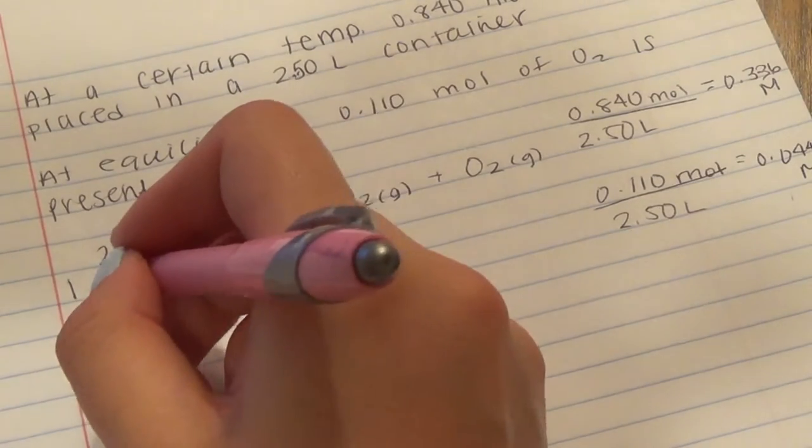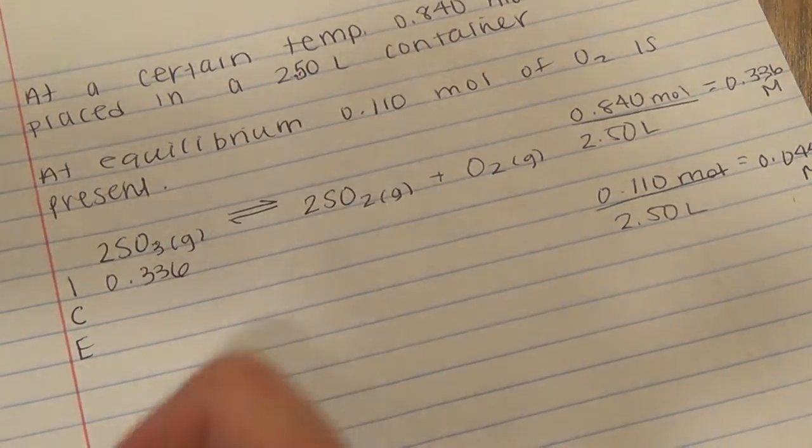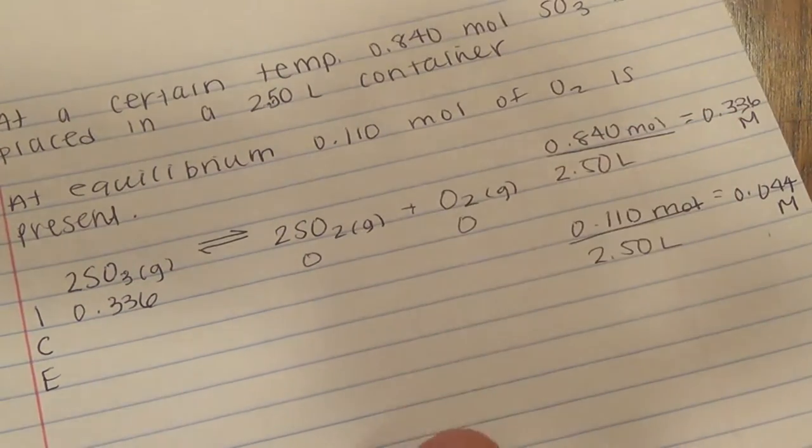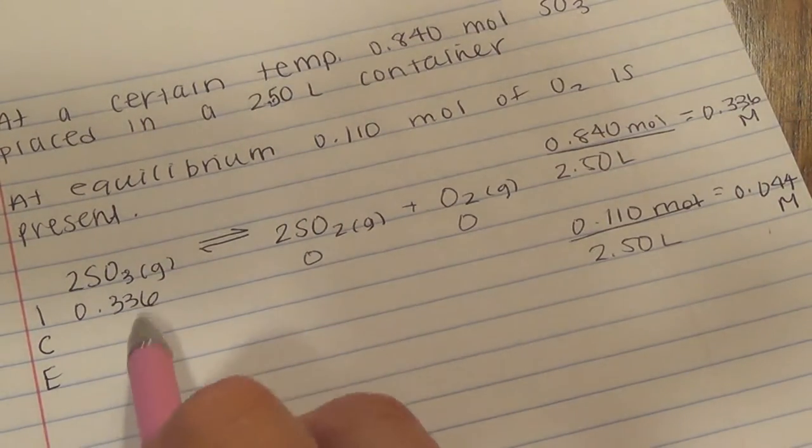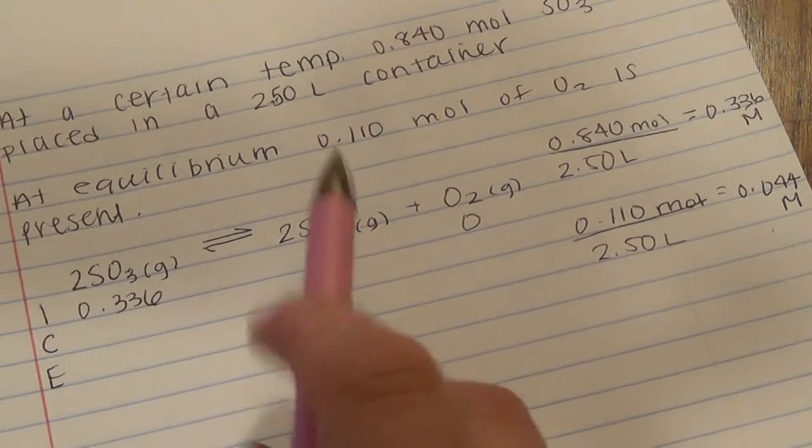So we're starting with 0.336 molarity of that. We don't have anything of that or anything of that to start with. So all of this we're taking from this side and adding it to this side. So we have a minus.